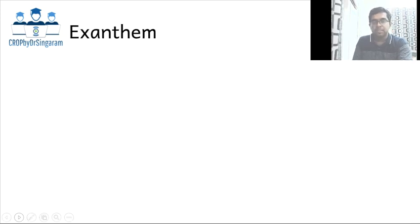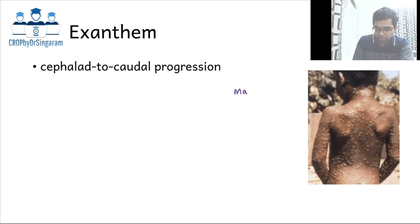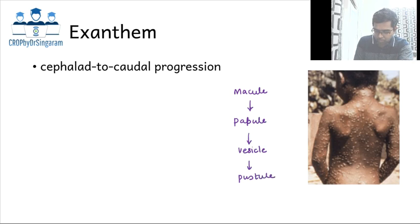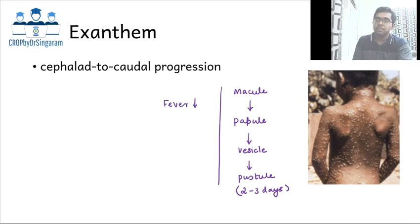Coming to the defining feature of the disease — the exanthem or the rash. The rash usually begins from the upper part, that is the head and face region, and then progresses downwards. This is called the characteristic cephalocaudal progression. The rash begins as a macule but rapidly progresses to a papule, which quickly turns into a vesicle and finally changes into a pustule. This occurs over a period of two to three days, representing a rapid evolution of rash. Another important point is that as the rash appears, the fever tends to decrease or abate — a characteristic feature to remember.